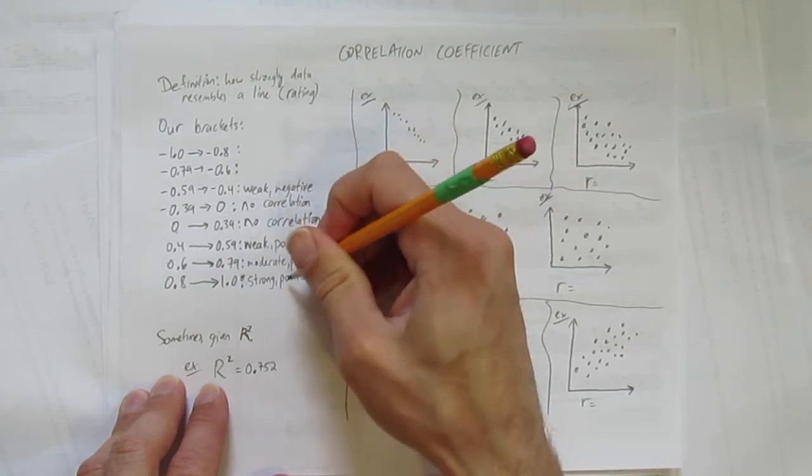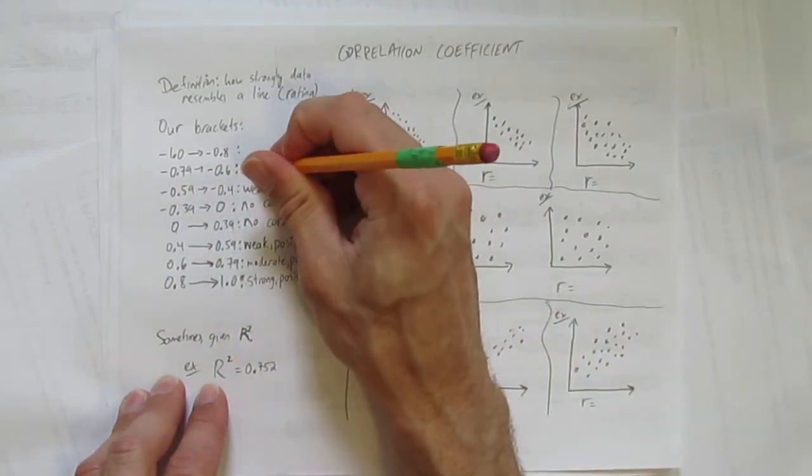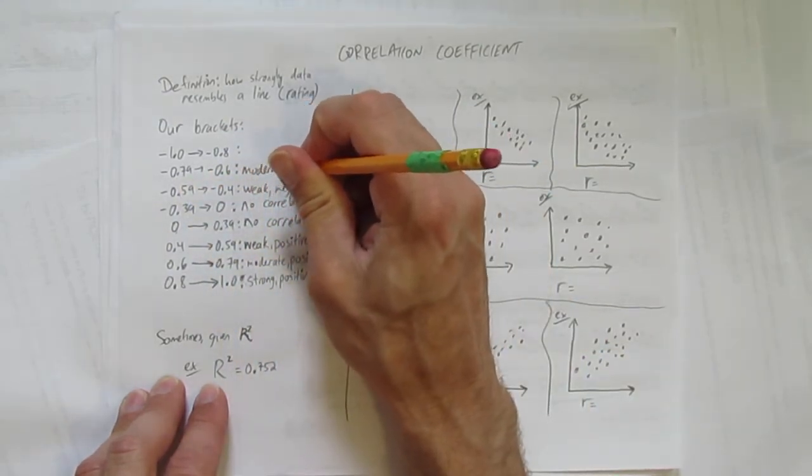And just like the other side if you're 60% to 79% but negative, we'll call that moderate and negative correlation.